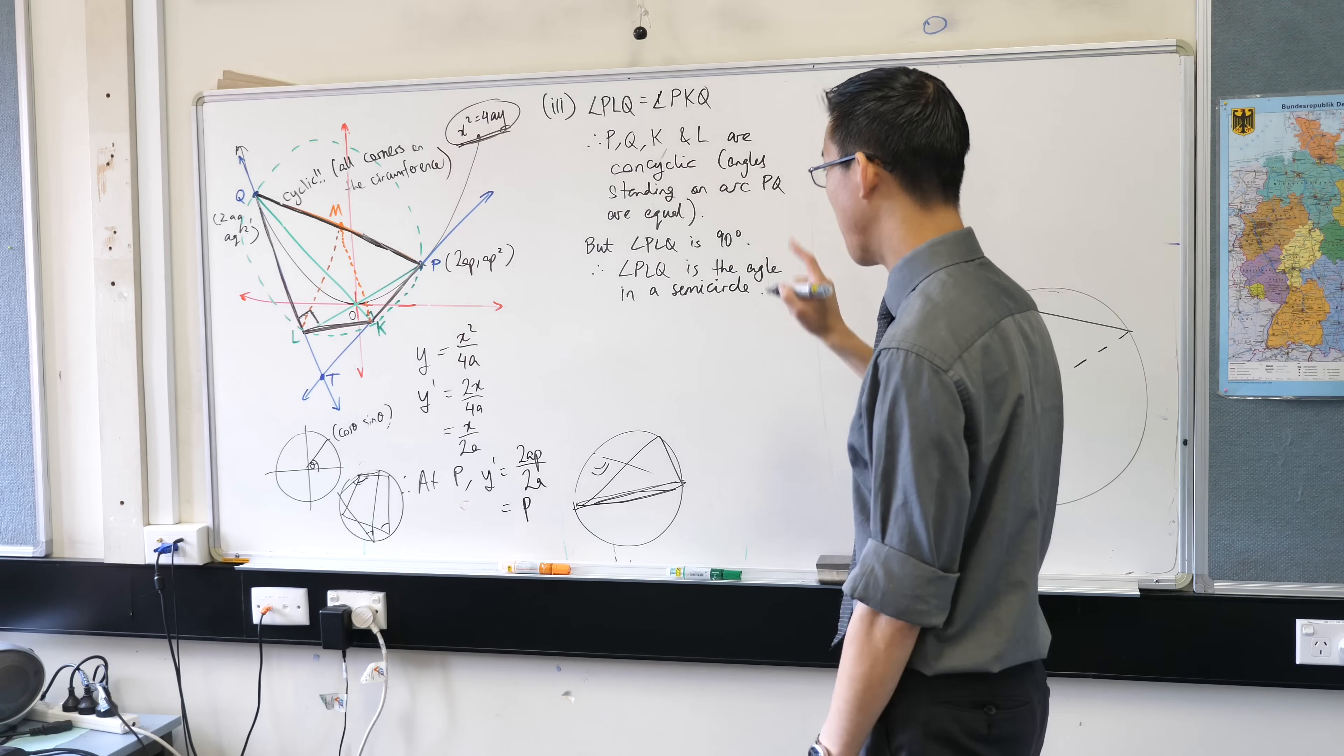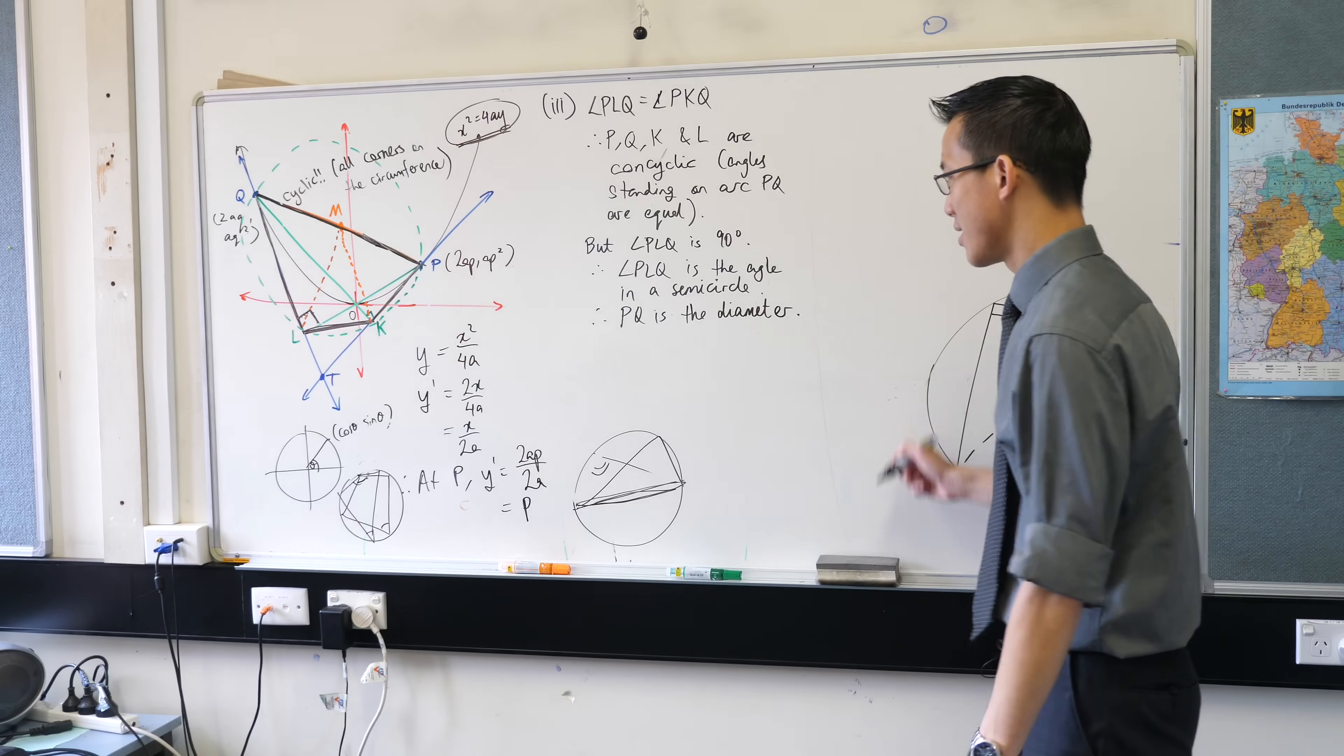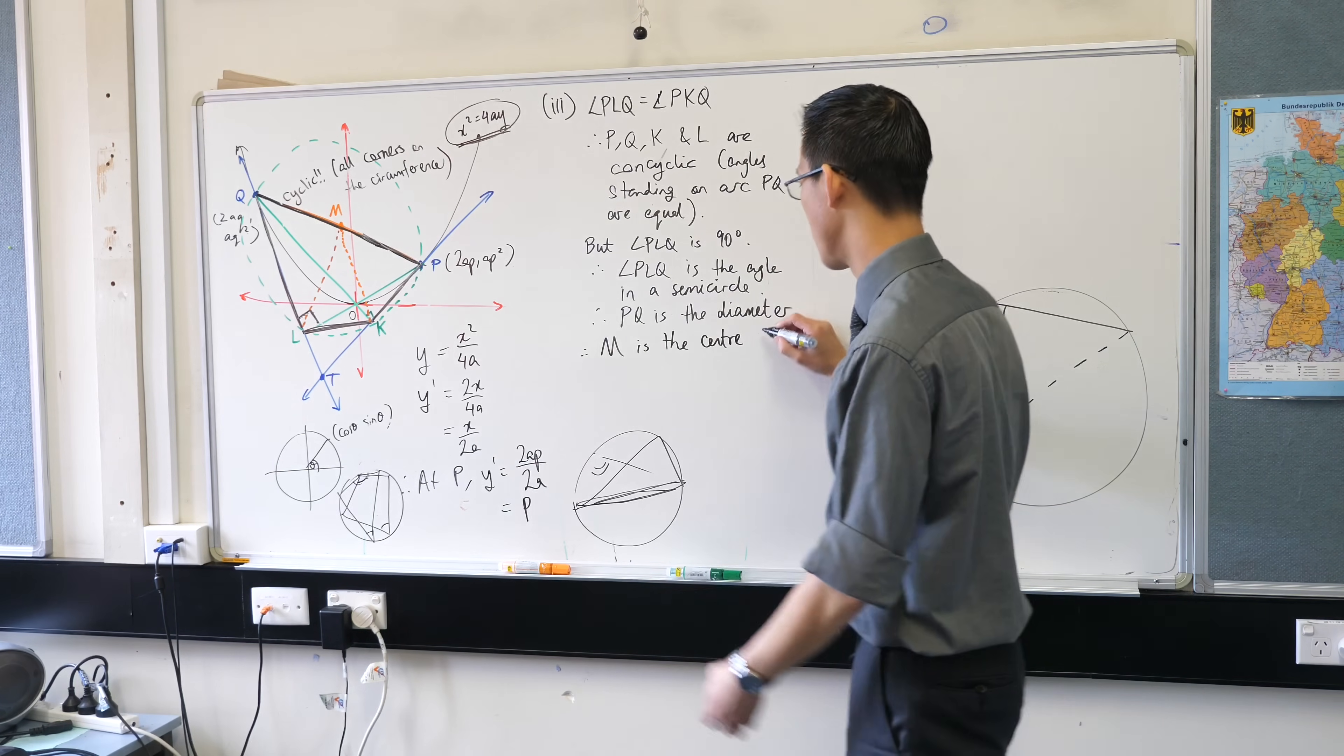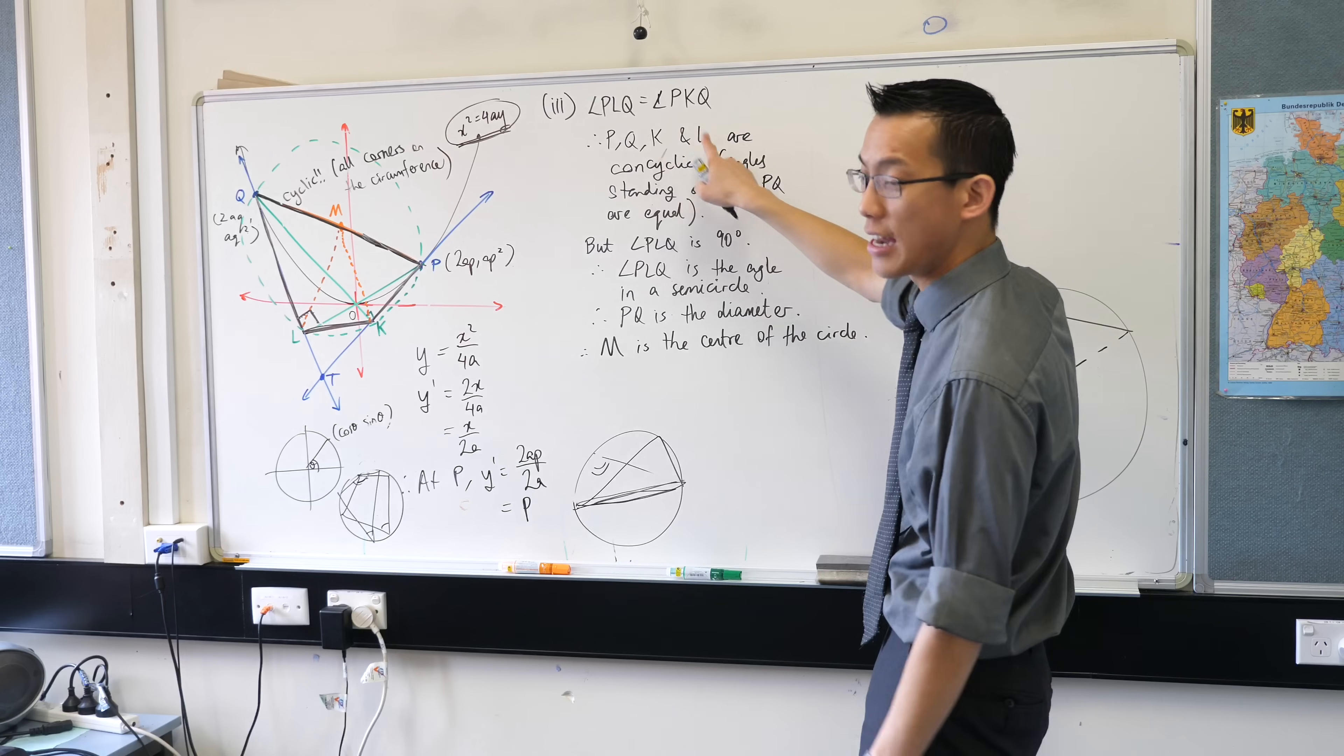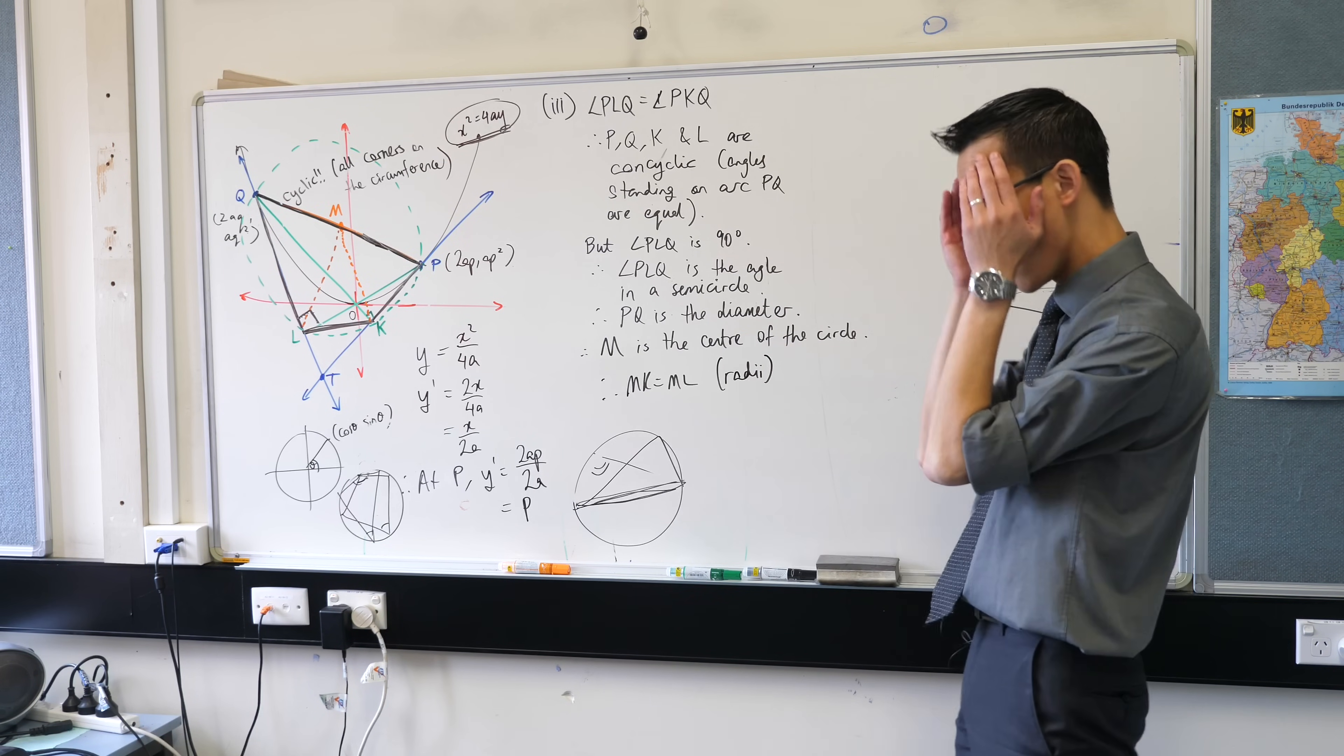Okay so therefore PLQ is the angle in a semicircle. But that means that PQ is the diameter. If PQ is the diameter, M which is the center of the diameter is the center of the entire circle because the center of any diameter is the center of the circle. M is the center. I've already shown that K and L are on the circumference, therefore this is the last line, MK and ML must both be equal because they are radii.